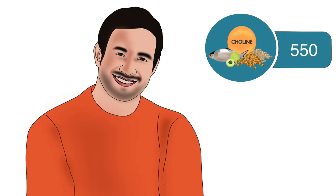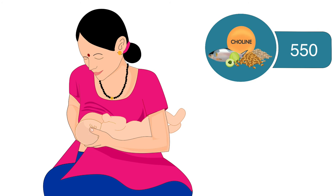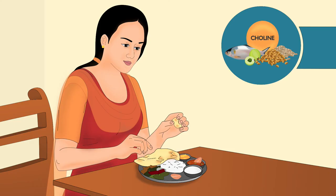Adult men require 550 mg per day. Adult women and pregnant women require 450 mg per day. Our body does not produce sufficient amounts of choline, hence it has to be taken through food.